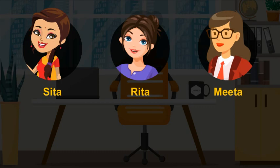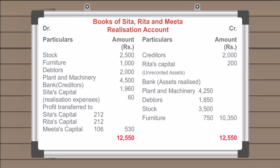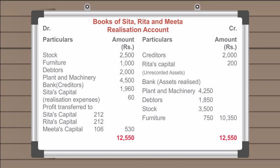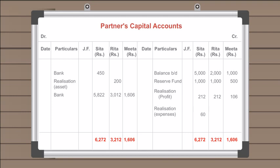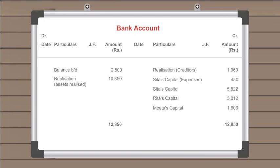Example. Sita, Rita, and Meeta are partners sharing profit and losses in the ratio of 2:2:1. Their balance sheet as on March 31, 2007 is given. They decide to dissolve the business. The following amounts were realized from plant and machinery. Sita agreed to bear all realization expenses; for this service, Sita is paid Rs. 560. Actual expenses on realization amounted to Rs. 450. Creditors were paid 2% less. There was an unrecorded asset of Rs. 250 which was taken over by Rita at Rs. 200. Prepare the necessary accounts to close the books of the firm.